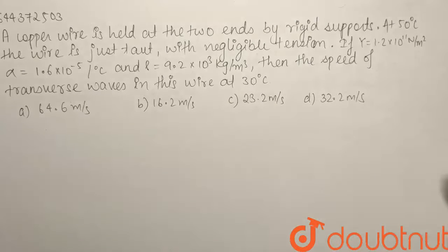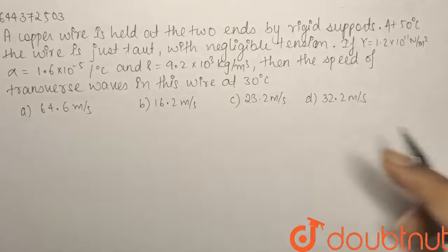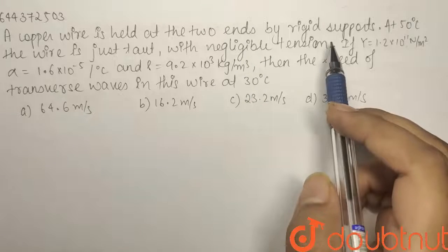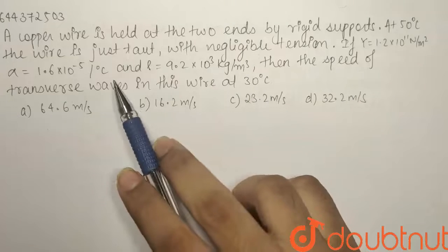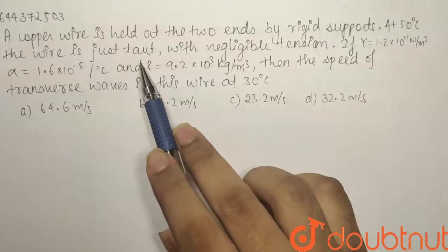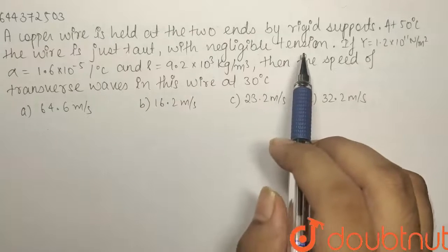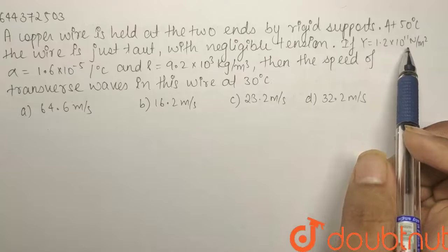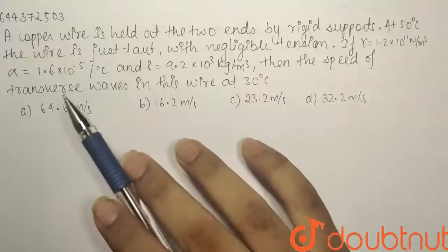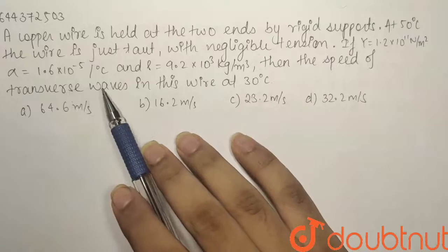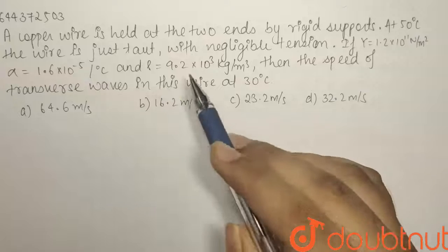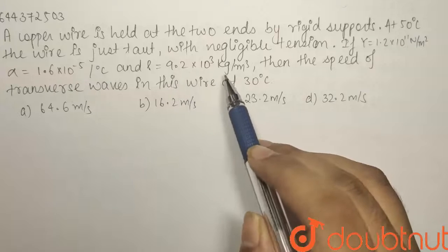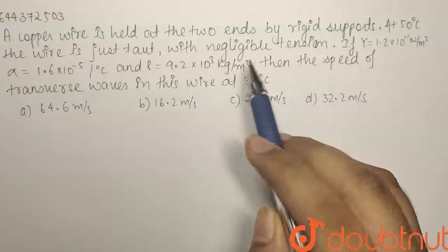Here we have a question from the chapter waves. A copper wire is held at the two ends by rigid supports. At 50 degrees Celsius, the wire is just taut with negligible tension. If Young's modulus equals 1.6 × 10^11 N/m², alpha equals 1.6 × 10^-5 per degree Celsius, and the density is 9.2 × 10^3 kg/m³.